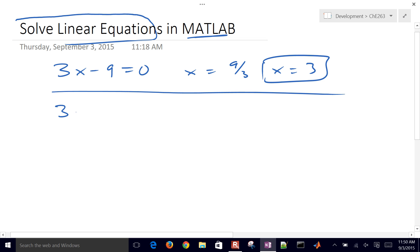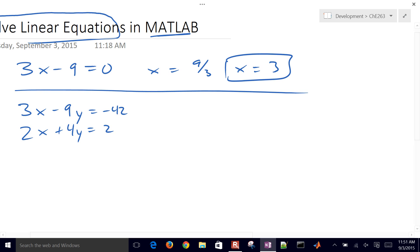Let's go 3 times x minus 9 times y equals negative 42. And then 2 times x plus 4 times y equals 2. So let's set that up and solve it in MATLAB.